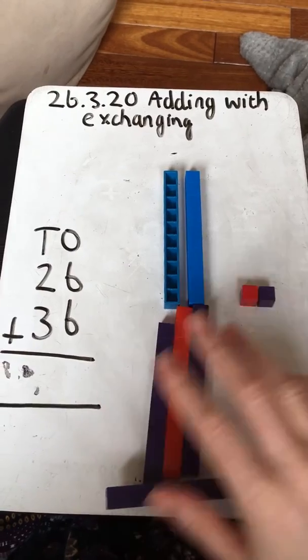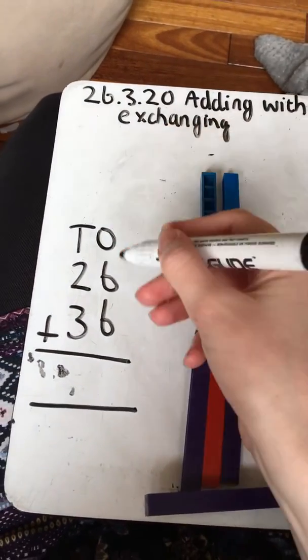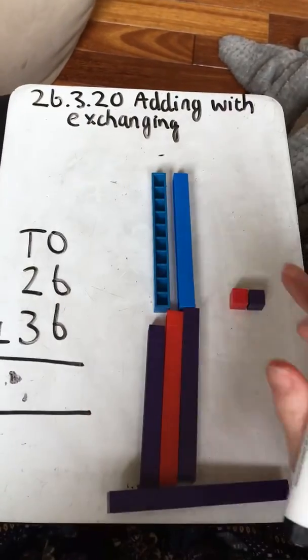And I'm going to put that over here. I can't really fit at the bottom so I'm just going to put it there. So I'll show you here what I did. Six plus six is 12, so I have two ones.